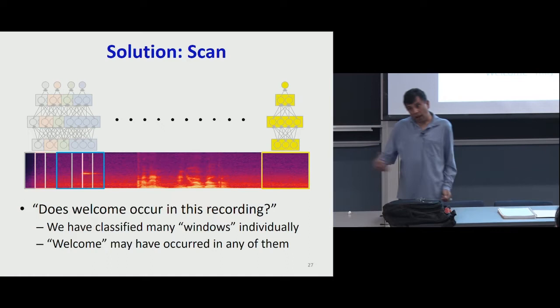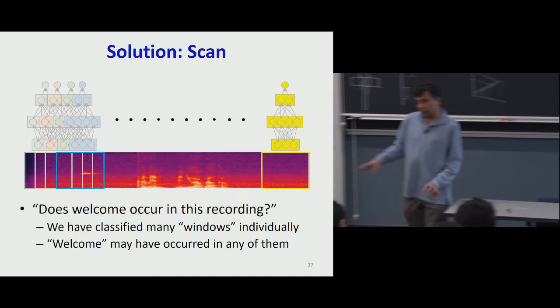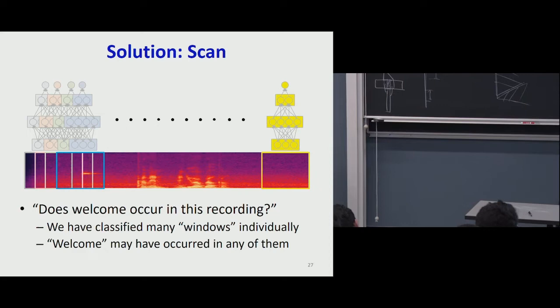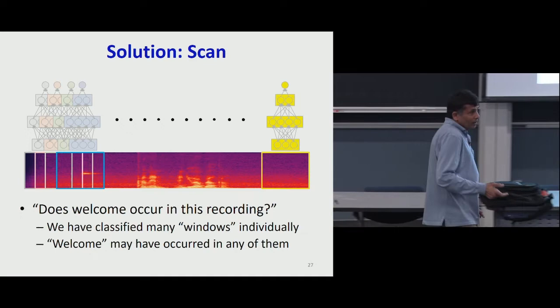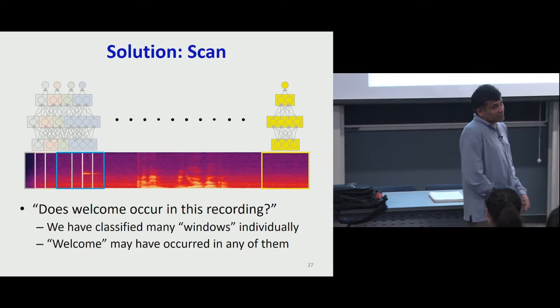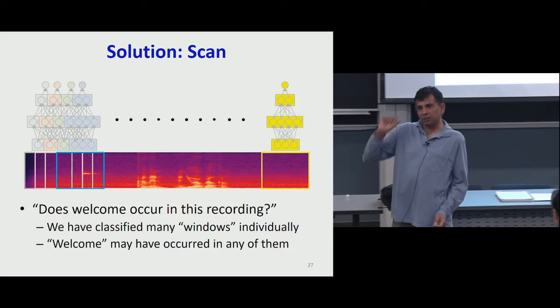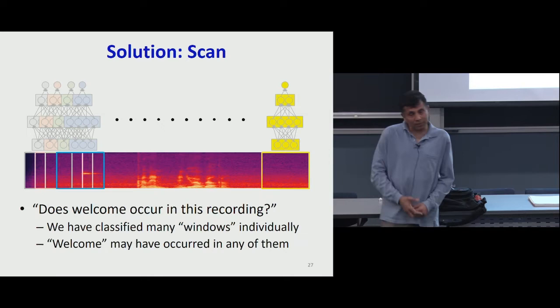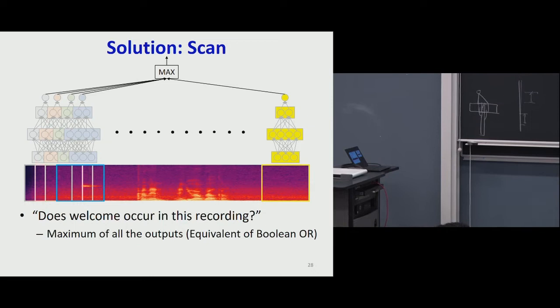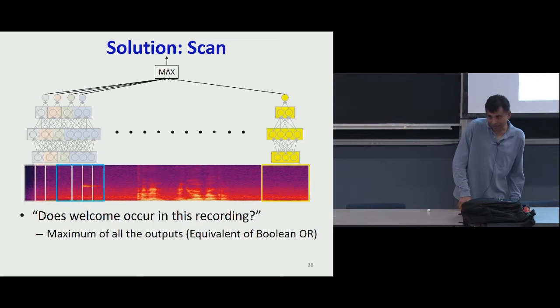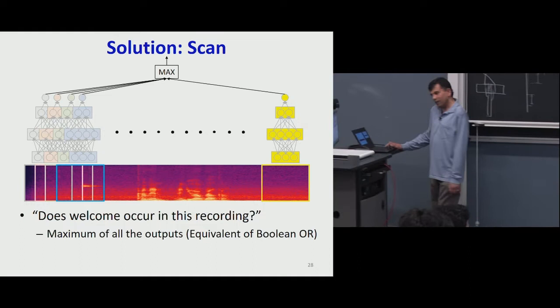The real question is: did the word 'welcome' occur anywhere in this recording? So I have a collection of decisions taken at every position. How do I combine them? I can take an OR — or equivalently, pick the maximum. If 'welcome' occurred in even one location, the maximum will be close to one. If it never occurred, the largest value will be small. So I pass all outputs through a max.